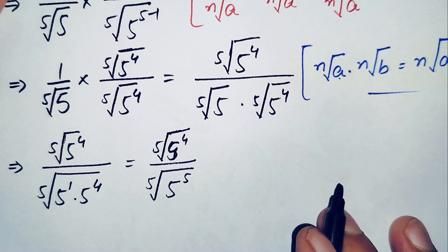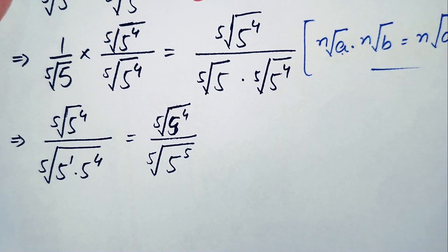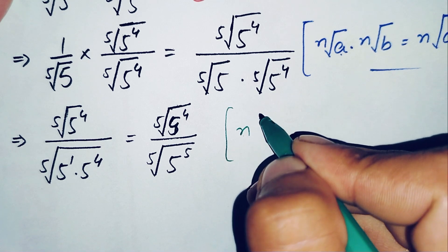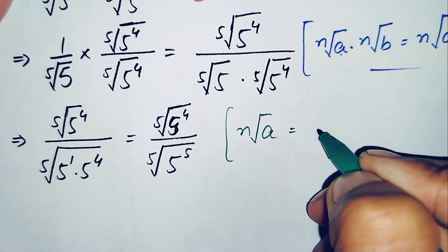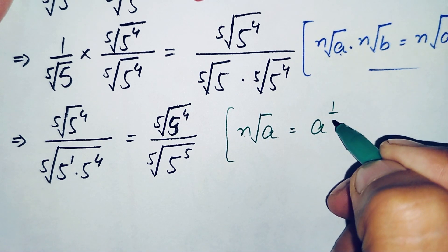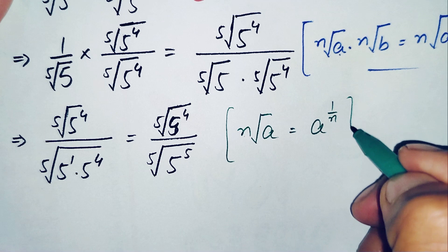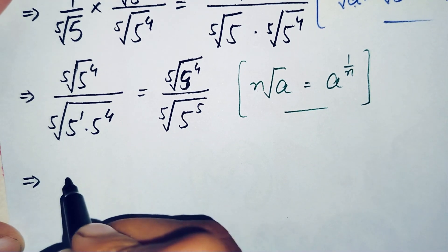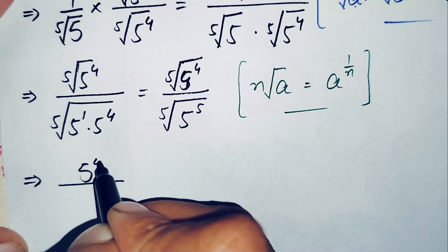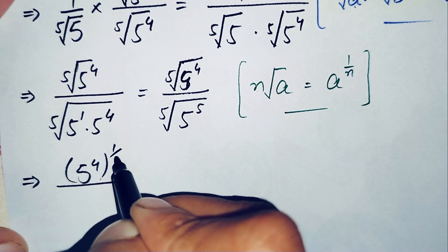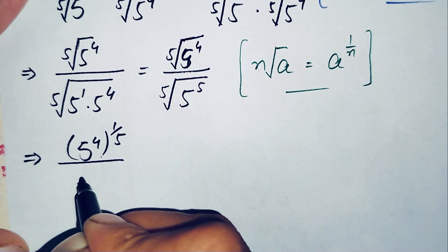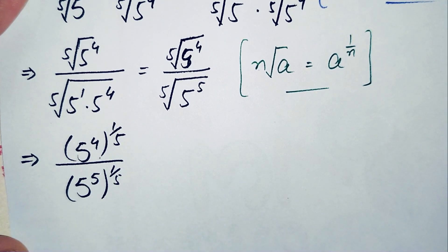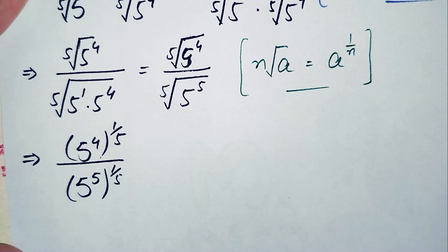Now in the numerator and denominator, we convert from radical to exponential form using the result that the nth root of a equals a raised to power 1 over n. This gives us 5 raised to power 4, all raised to power 1 over 5, divided by 5 raised to power 5, all raised to power 1 over 5.